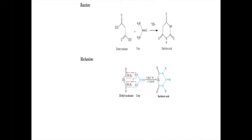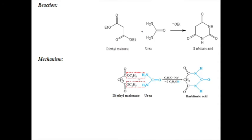This undergoes a cyclization reaction with the diethyl malonate. Here you can see the reaction and mechanism — the structure of diethyl malonate and urea which react and form barbituric acid by condensing together. In the mechanism, one hydrogen from the urea as well as the ethoxy group (C2H5O) from the diethyl malonate are removed.